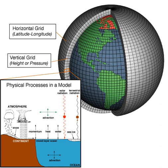A general circulation model is a type of climate model. It employs a mathematical model of the general circulation of a planetary atmosphere or ocean. It uses the Navier-Stokes equations on a rotating sphere with thermodynamic terms for various energy sources, radiation, and latent heat. These equations are the basis for computer programs used to simulate the Earth's atmosphere or oceans.